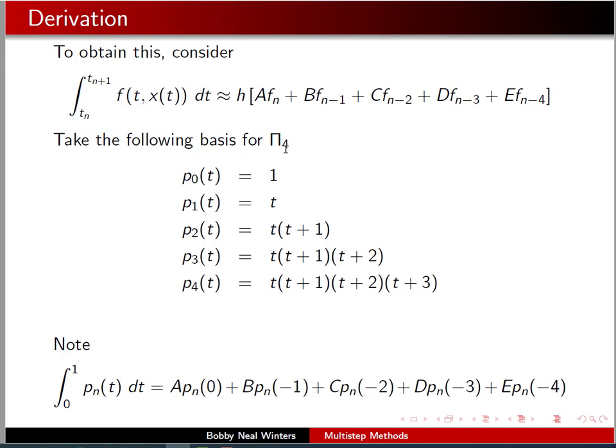We take a basis for the set of polynomials of degree 4 or less, and that basis, we'll let p of 0 be 1, p of 1 be t, p of 2 be t times t plus 1, and so forth.